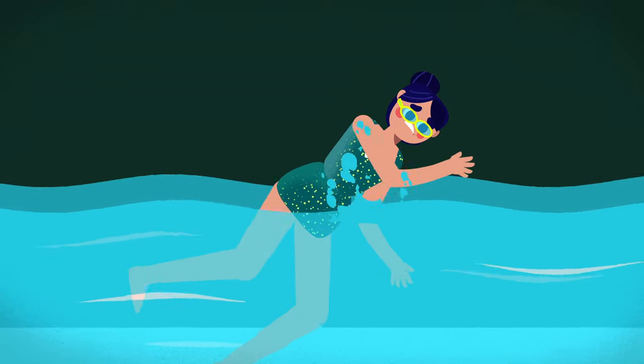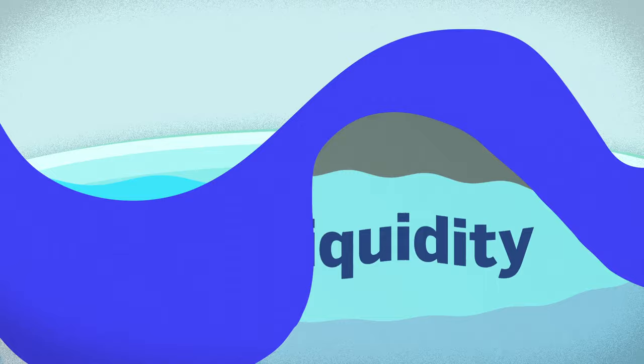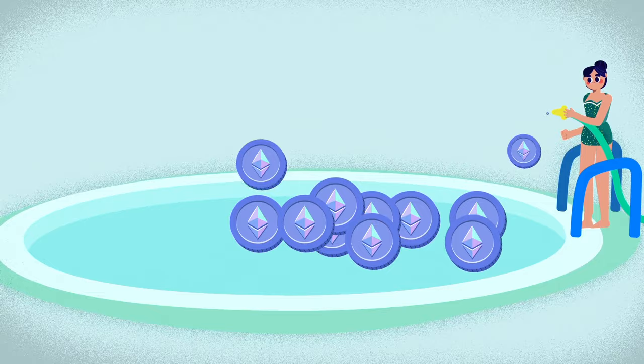Have you ever tried to swim in a pool or river that's too shallow? It's pretty hard, right? Well, that's a lot like trying to buy or sell a cryptocurrency in a market with low liquidity. Just like you need a certain amount of water to have a nice and smooth swim, a cryptocurrency market needs a certain amount of trading volume to ensure liquidity.